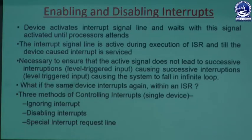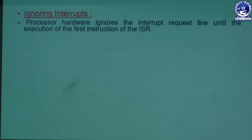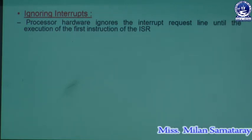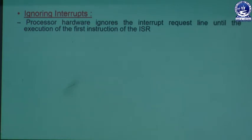The first method is ignoring the interrupt. In this method, the processor hardware ignores the interrupt request line until the execution of the first instruction of the ISR. The interrupt service routine is a combination of multiple instructions, so the processor ignores interrupt requests generated by the device until the first instruction of the ISR has executed. After executing the first instruction, the processor hardware can accept an interrupt request.